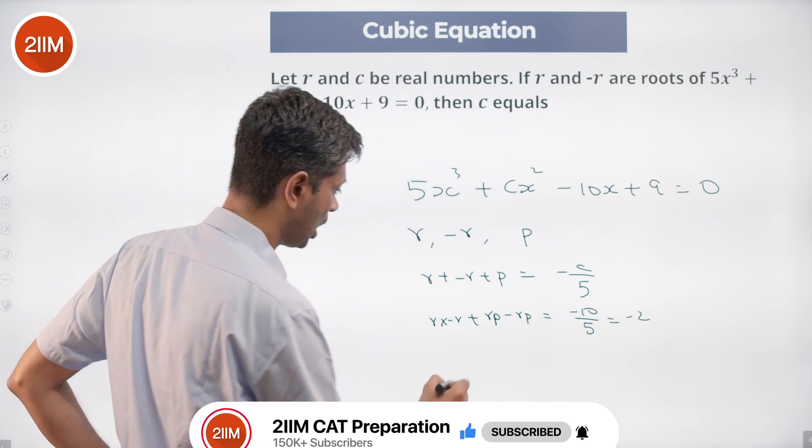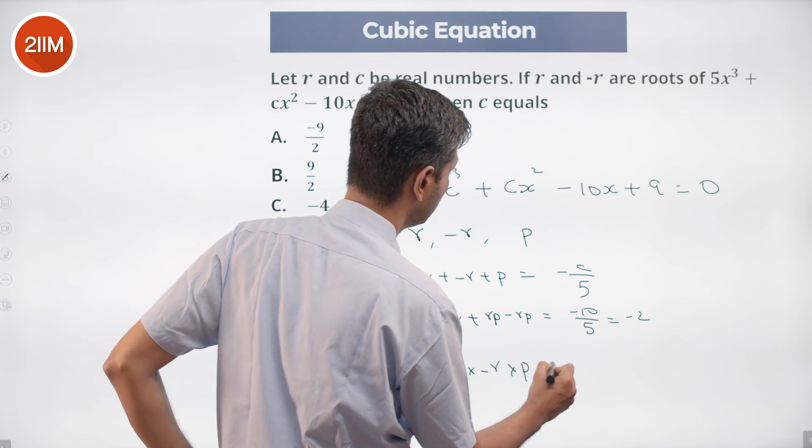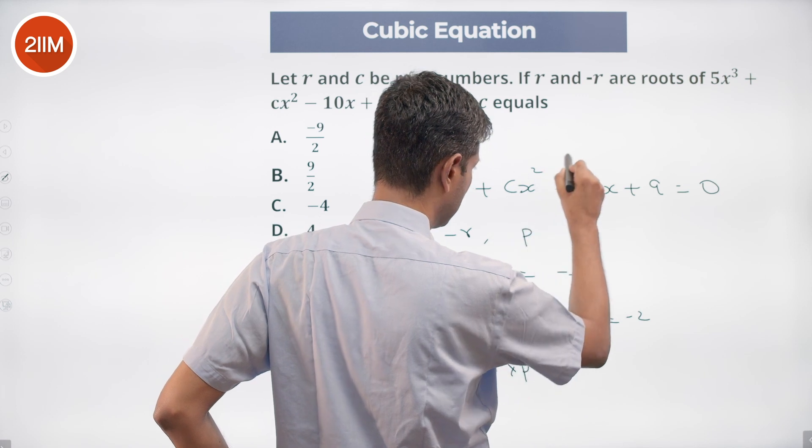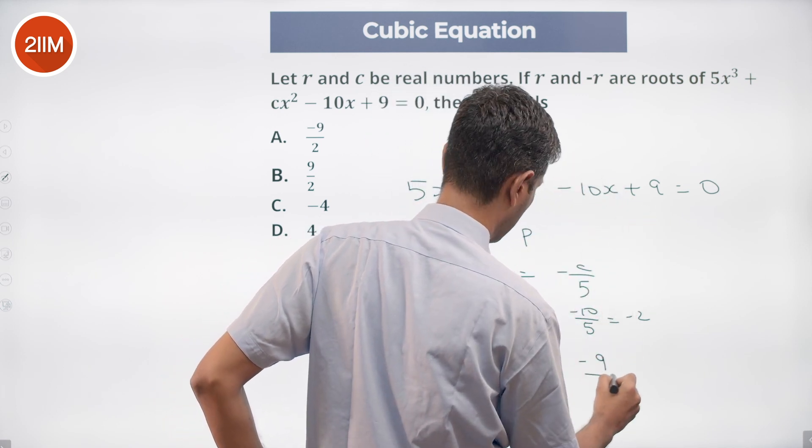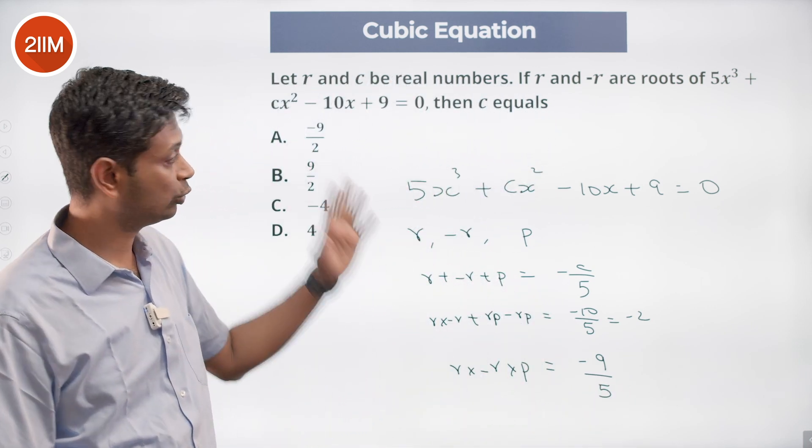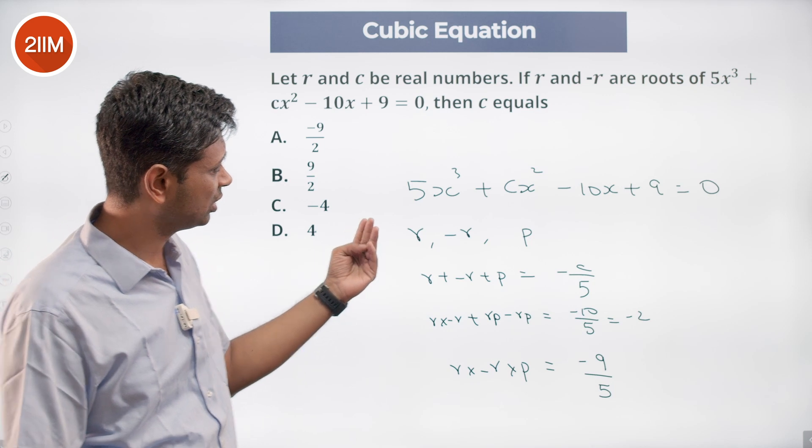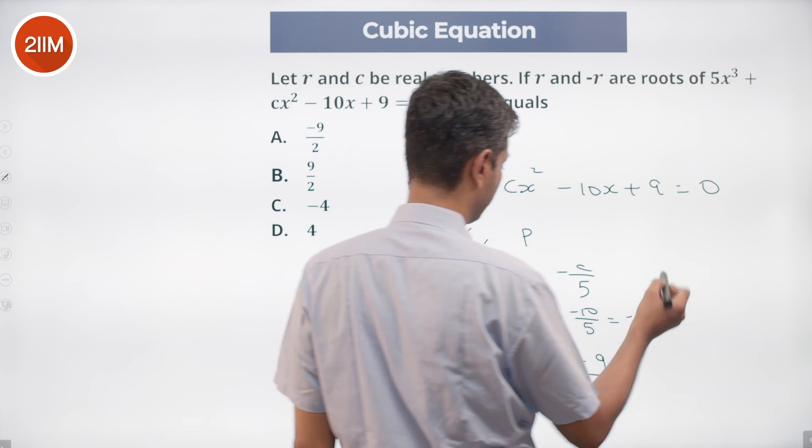Product of the roots: r × (-r) × p = -9/5. Using these three equations, we should be able to find the value for c. Sum of the roots, sum of the roots taken two at a time, three at a time. So r + (-r) = 0, p = -c/5.